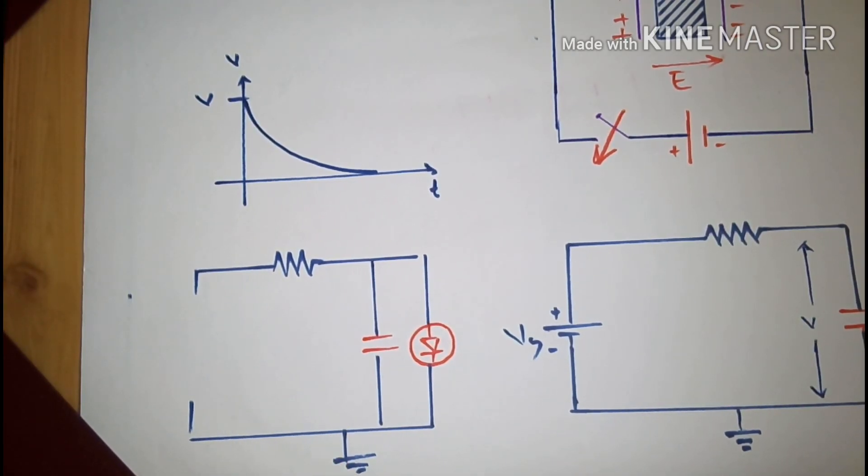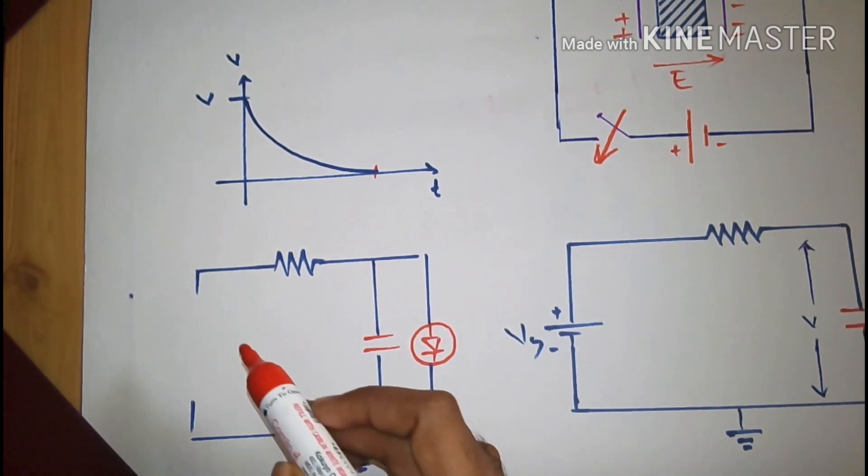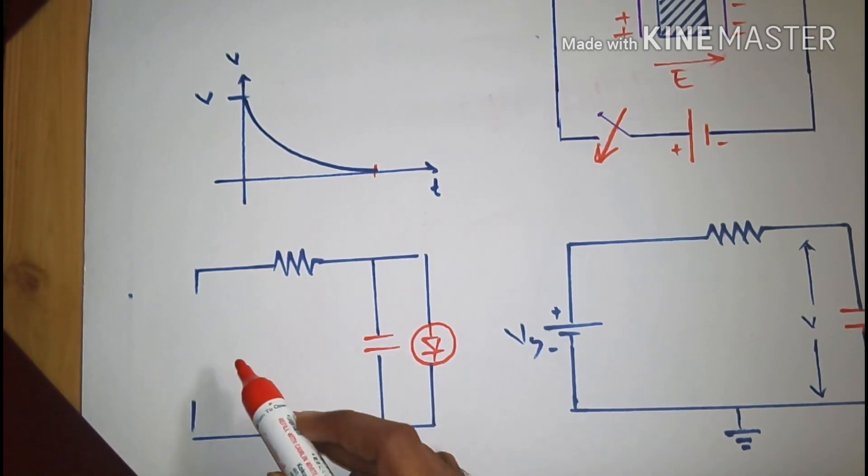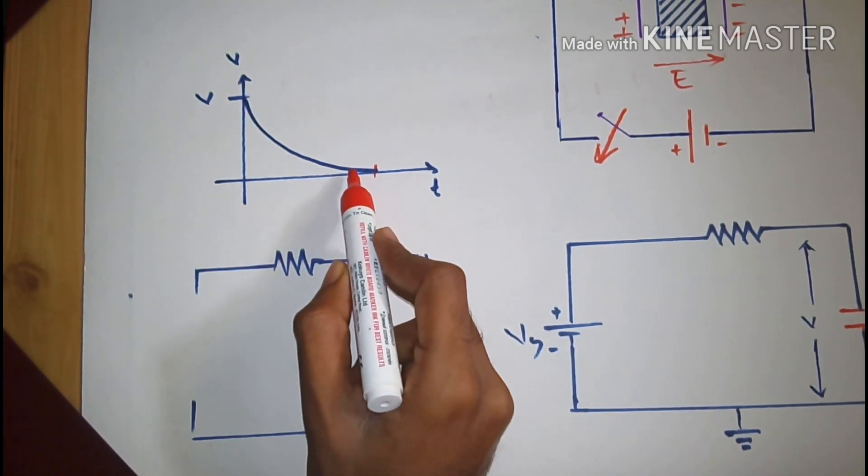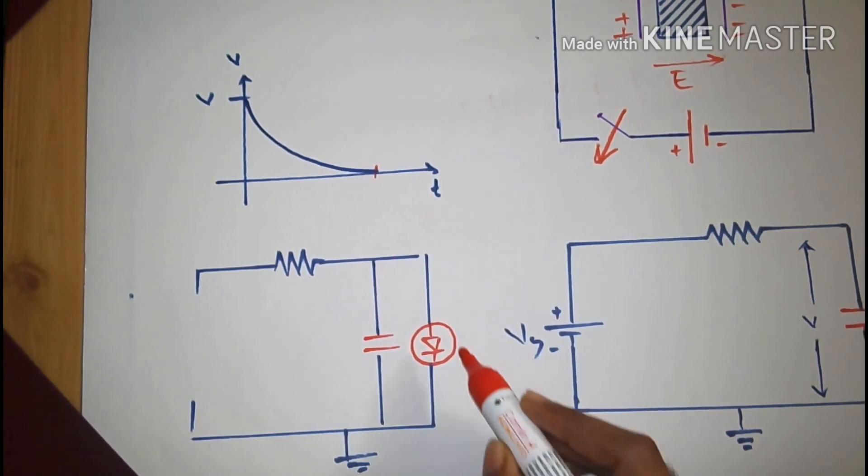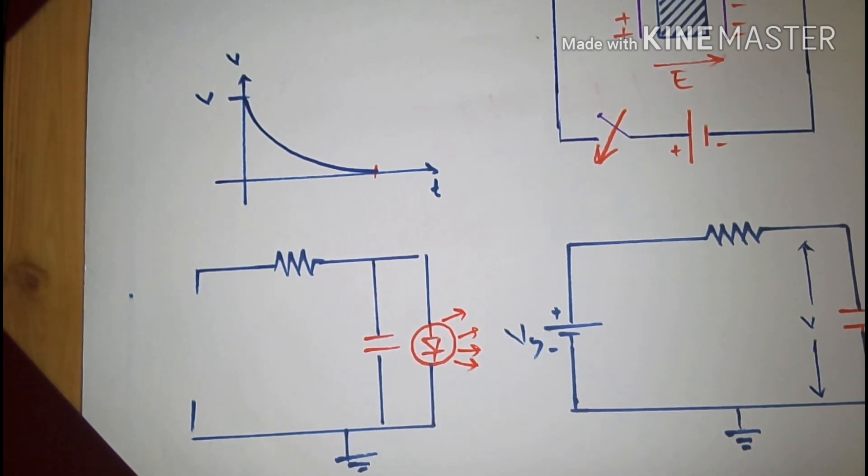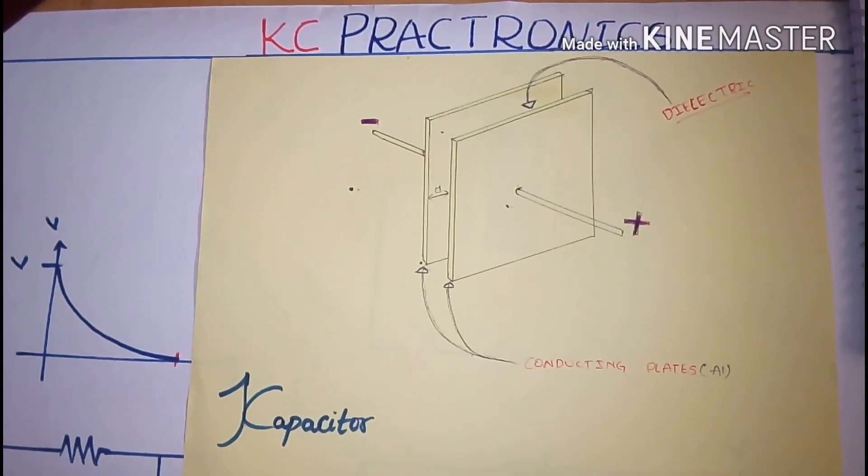Now, let us see the case of discharging the capacitor. In order to discharge the capacitor, the voltage is removed and then an external load is connected across the capacitor. Here I have considered the load to be an LED light. When the voltage is disconnected, it starts discharging exponentially with time until it reaches a minimum voltage of zero. As the capacitor starts discharging, the LED glows until it reaches minimum voltage.